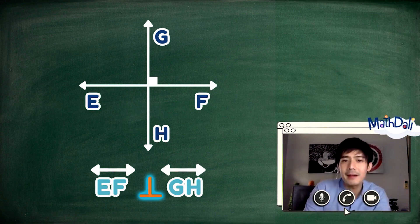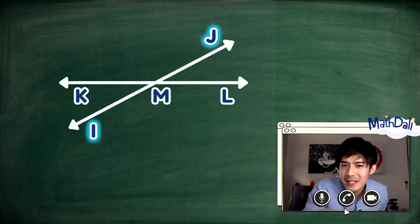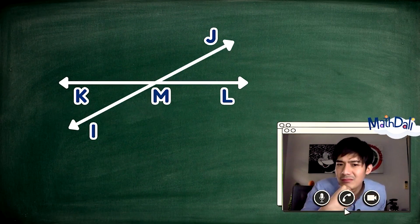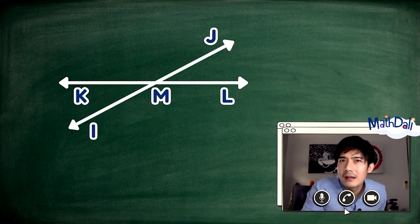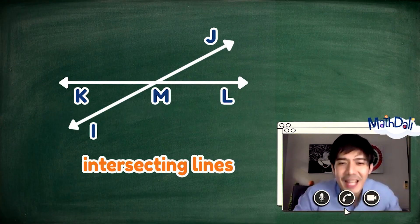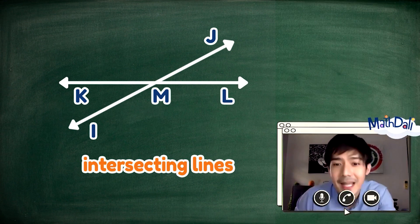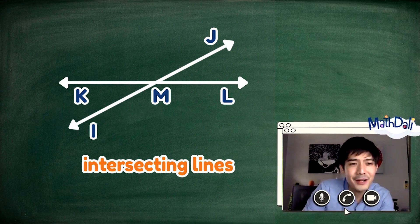Next example naman. Anong linya ang mga ito? Perpendicular lines yun ba ito? Nagtatagpo ba ang line KL at line IJ? At nakakabuo ng right angle? Hindi, di ba? Hindi sila nagpo-form ng 90 degrees o right angles. Kung hindi sila perpendicular lines pero nagtatagpo sila, ano tawag yun? Very good. Intersecting lines. Line IJ intersects line KL.